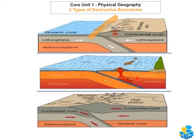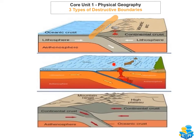The next type is when an oceanic plate and an oceanic plate meet each other. They may be caused to meet because of convection currents in the mantle. An example of an oceanic and oceanic crust collision would be the Pacific plate and the Philippines plate.